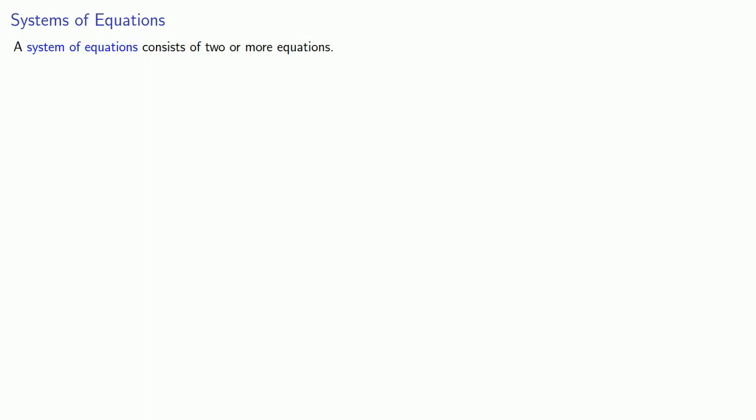A system of equations consists of two or more equations. A solution to a system of equations consists of values of the variables that make all of the equations true.